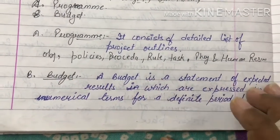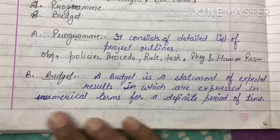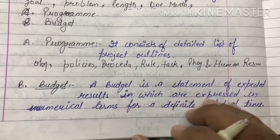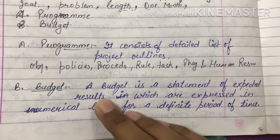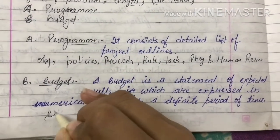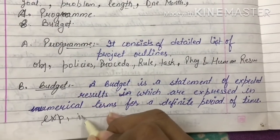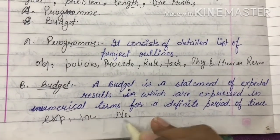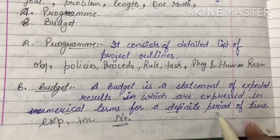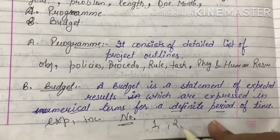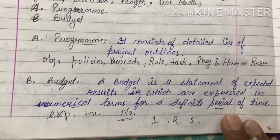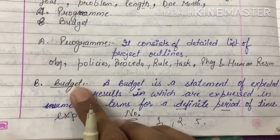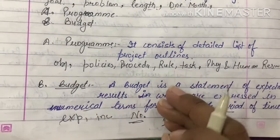A budget is a statement of expected results which are expressed in numerical terms for a definite period of time. Budget वो statement होता है जिसमें हम expenditures और incomes दोनों को numerical terms में लिखते हैं, किसी definite period के लिए जैसे one year, two years, या five years. जैसे government of India के five year plans और yearly budgets होते हैं, इसी तरीके से companies भी अपना budget prepare करते हैं before they start any new project.